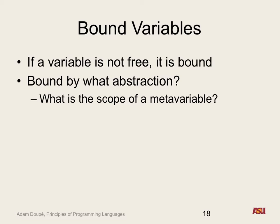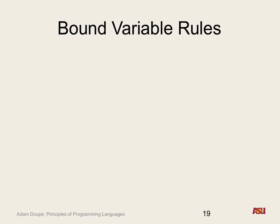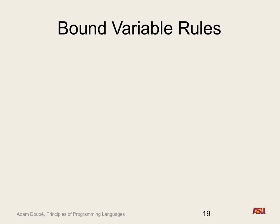We define free variables to talk about this precisely. If you strip off the outermost abstraction and ask what X's are free in the body — those must be bound to that abstraction. Any free X's in the body, when you throw a lambda X around it, are bound to that lambda X. So if I add a lambda X, the free X's in the body are now bound to that abstraction. If I add a lambda Y, a Y that was already bound inside stays bound to its inner abstraction.